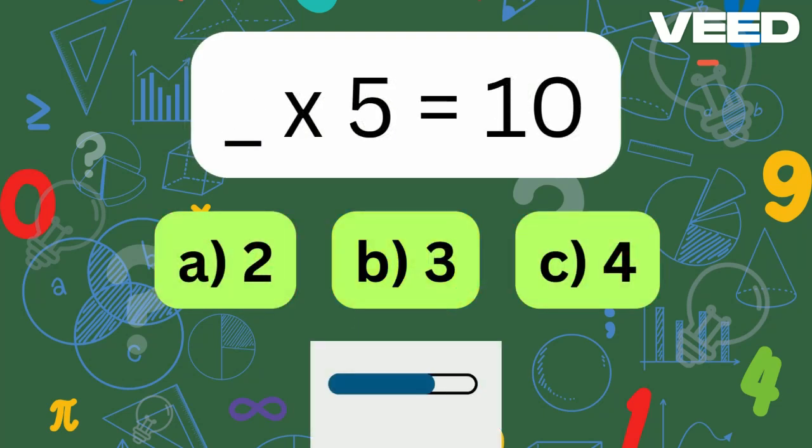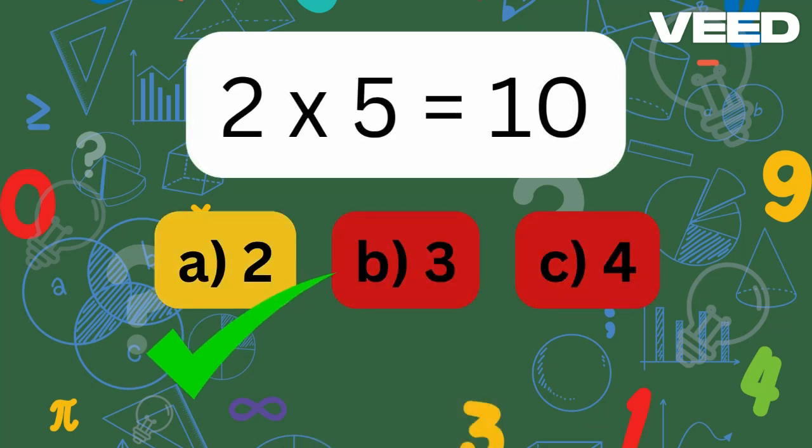What times 5 is equal to 10? Excellent, 2 times 5 is 10.